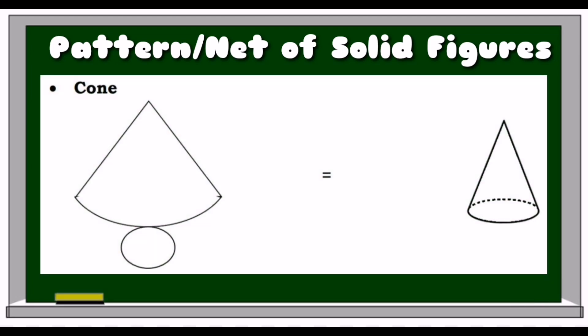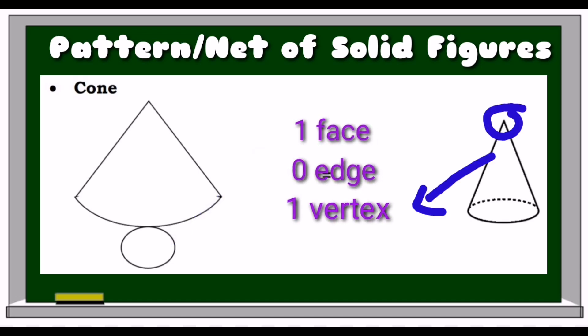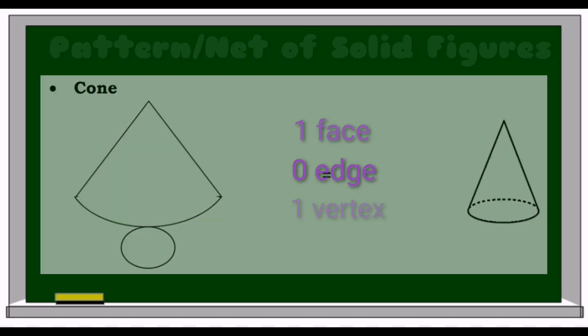The last net shown is for cone. A cone has 1 face, 0 edges, and 1 vertex.